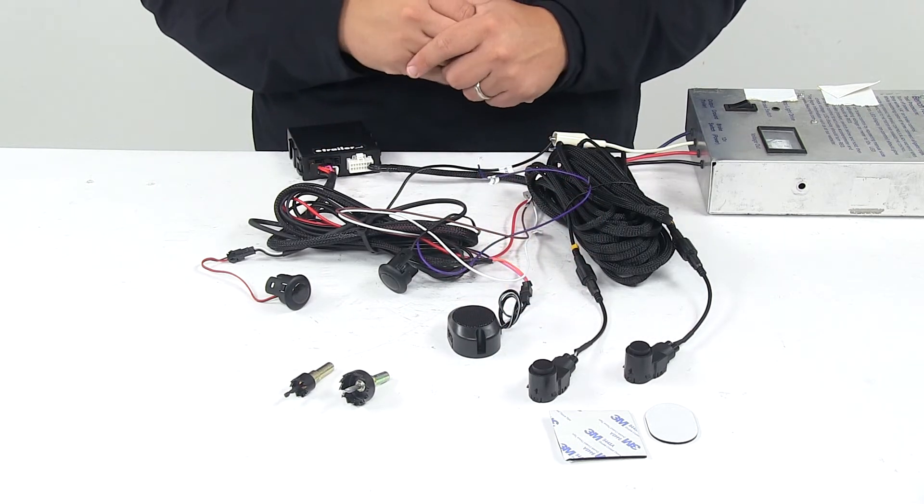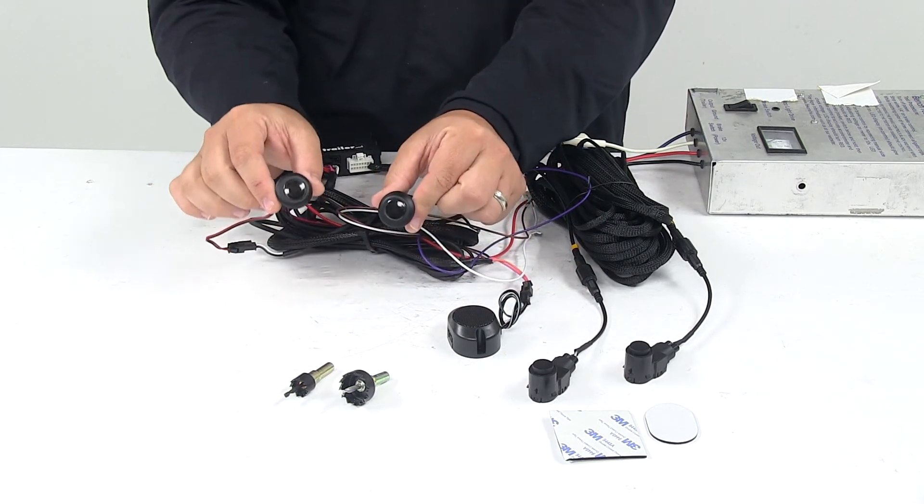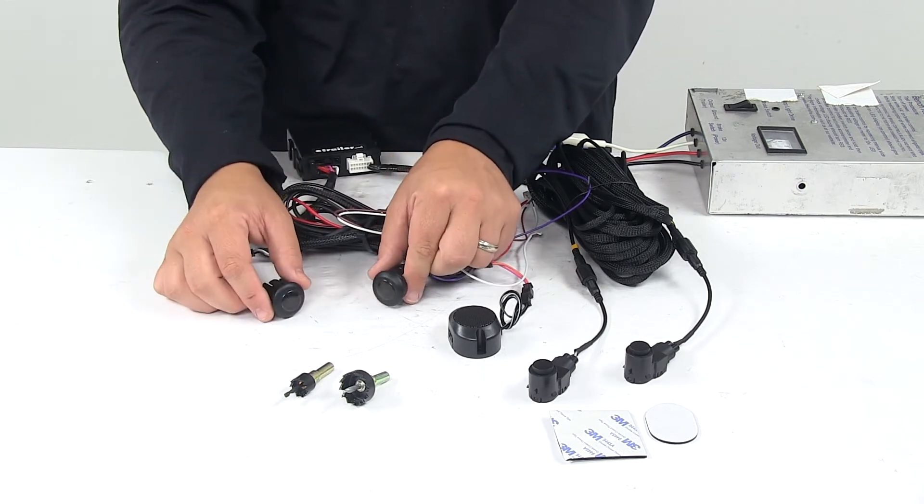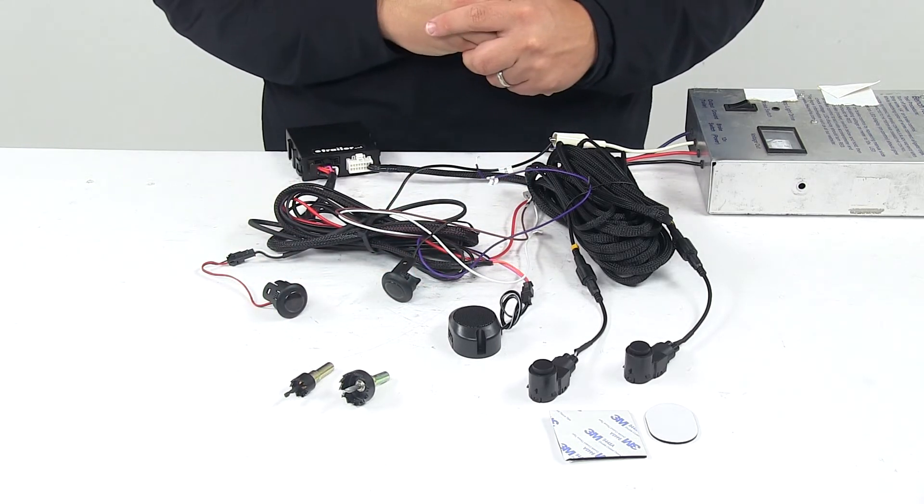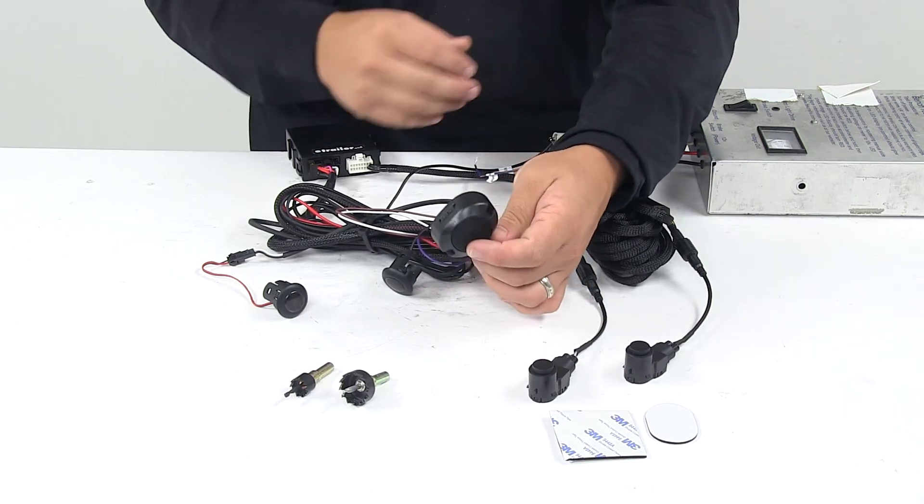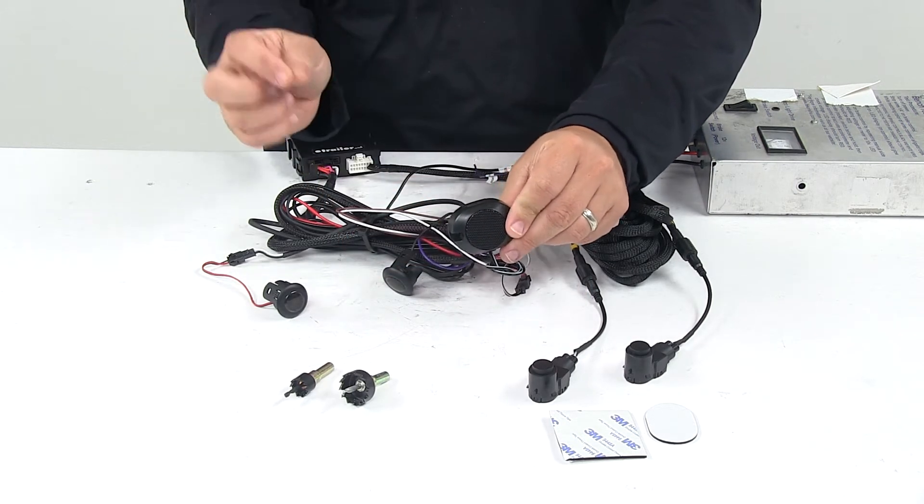The visual alert for this system is designed to mount in the A pillar of the vehicle to be easily seen by the driver at all times and then you have the speaker right here which would be mounted in an area that you could easily hear it.